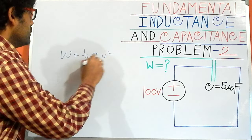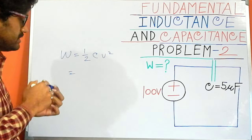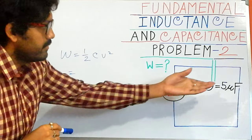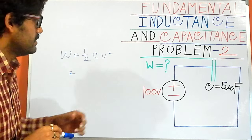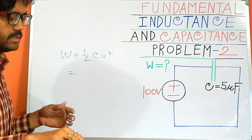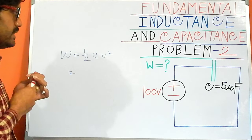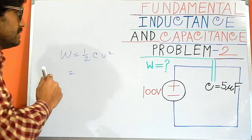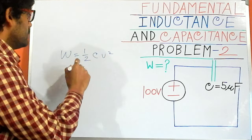What is the value of the capacitor? The value of the capacitor is 5 microfarads and the voltage is 100. Just put those values in and after that you will get the energy across this capacitor.